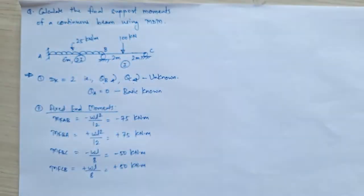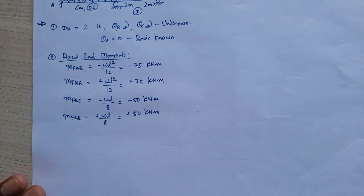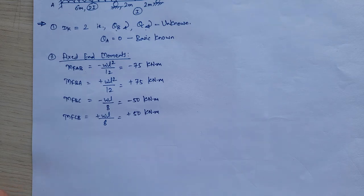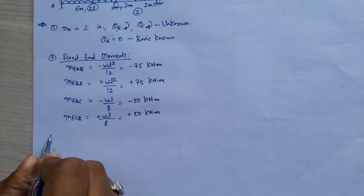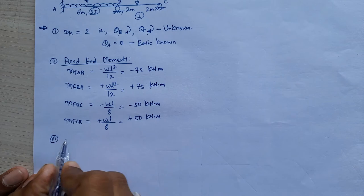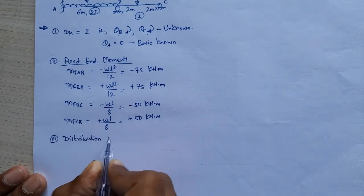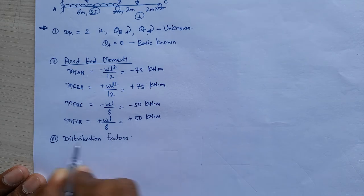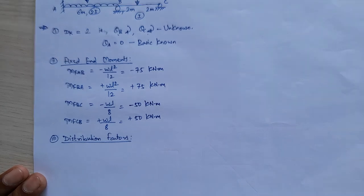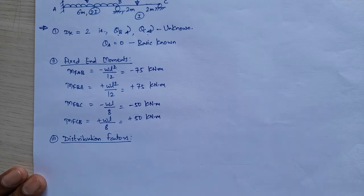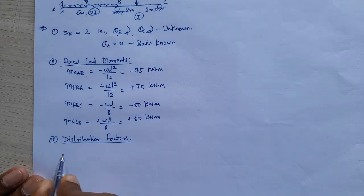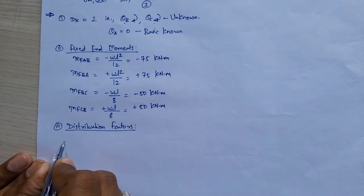Now, in slope deflection method the third step was slope deflection equations, but here there are no slope deflection equations. Instead, you have to calculate the moment using distribution factors. So the third step will be distribution factors. To calculate distribution factors, you need to check whether your supports are capable or incapable of resisting moments, and for this you prepare one table.